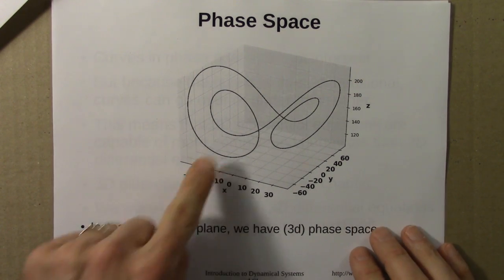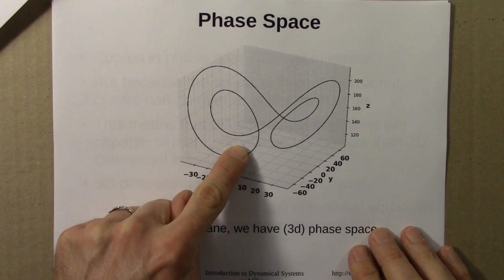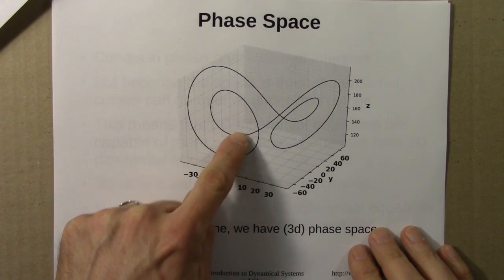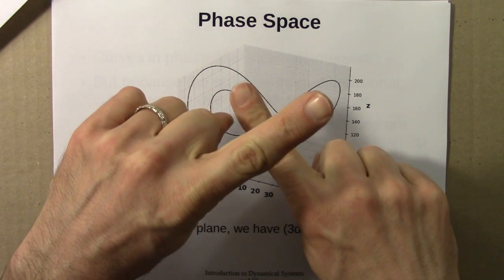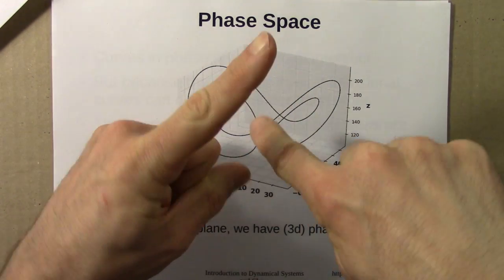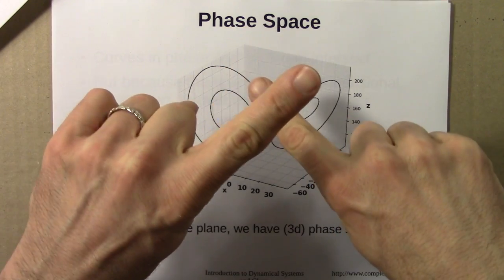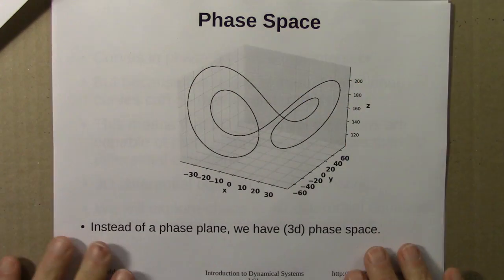It looks like these lines cross, but they don't really because this is three-dimensional space. This line is above that one, just like this finger is above that one. It looks like they cross, but they aren't really because it's a three-dimensional space.